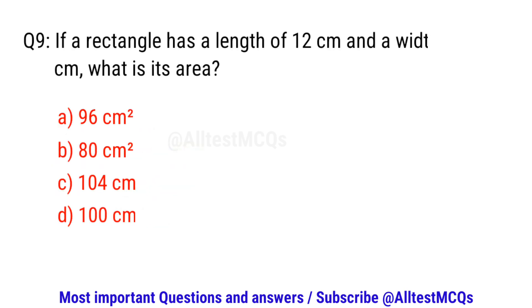Question number nine. If a rectangle has a length of 12 cm and a width of 8 cm, what is its area? The right option is A. 96 cm².